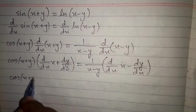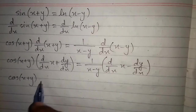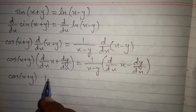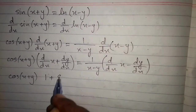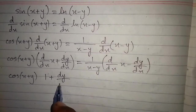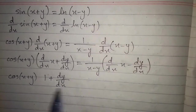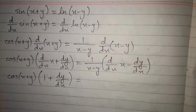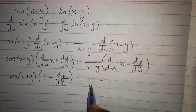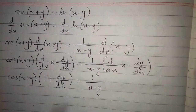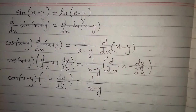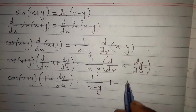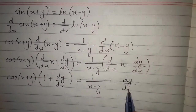So we have cos of x plus y times the quantity: the derivative of x is 1, plus dy/dx. On the right side we have 1 upon x minus y times the quantity: 1 minus dy/dx.